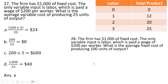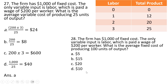Question 28. The firm has $1,000 of fixed cost; the only variable input is labor, paid a wage of $200 per worker. What is the average fixed cost of producing 100 units of output? We take 1,000 and divide by 100 to get $10. Answer choice D — average fixed cost is fixed cost divided by output.